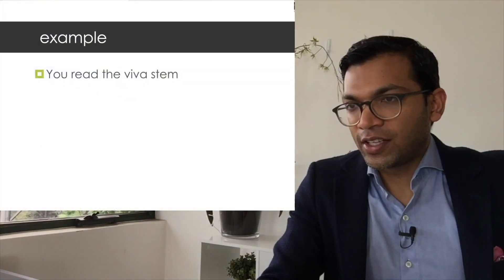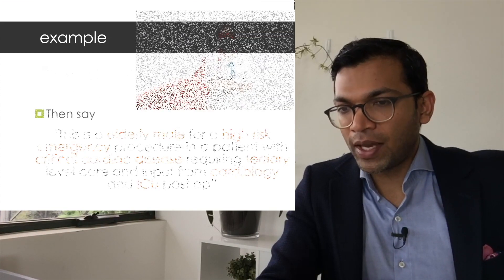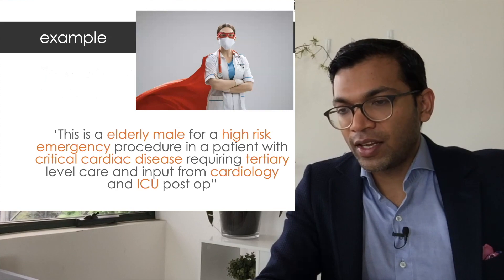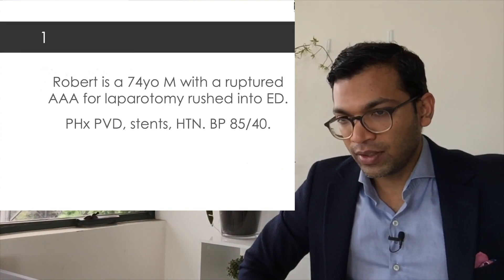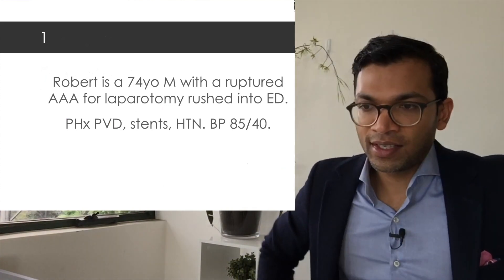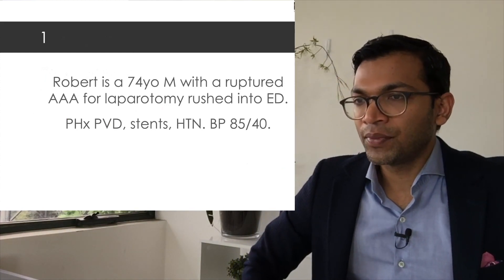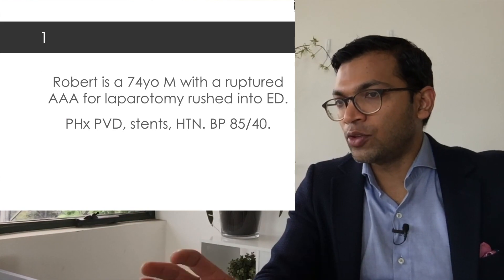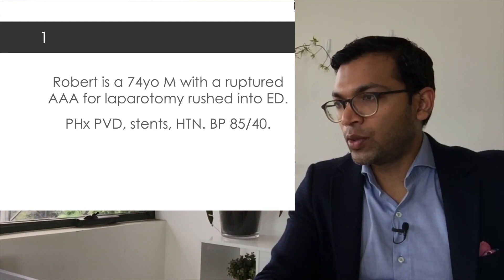It's important to remember that if you're not confident in an area, referring it up is both safe and appropriate in the exam. Let's get into the actual exercise. The format looks something like: 'This is an elderly male for a high-risk emergency procedure in a patient with critical cardiac disease, requiring tertiary-level care and input from cardiology and ICU post-op.' First case: Robert is a 74-year-old male with a ruptured triple-A for laparotomy, rushed into ED by ambulance. Past history of vascular disease, stents, hypertension, and a blood pressure of 35/40.